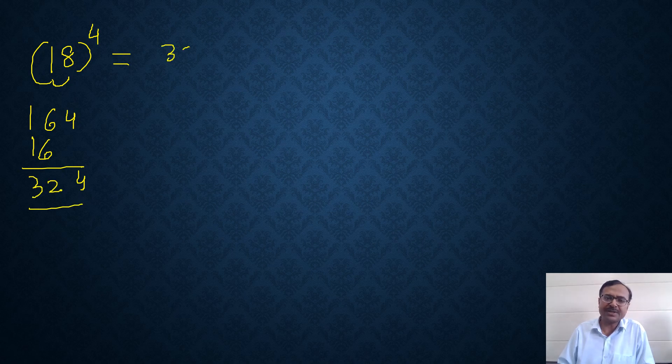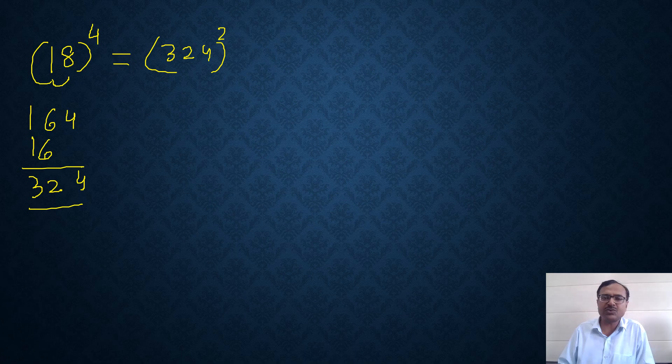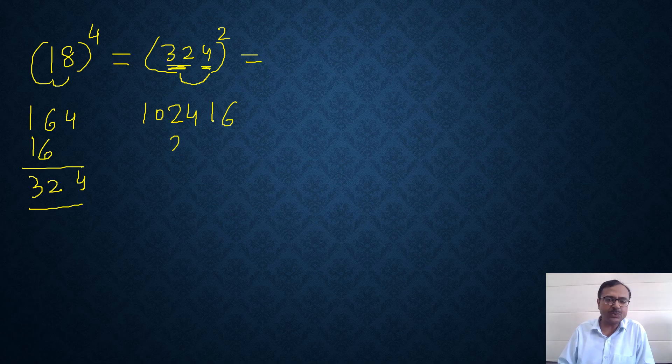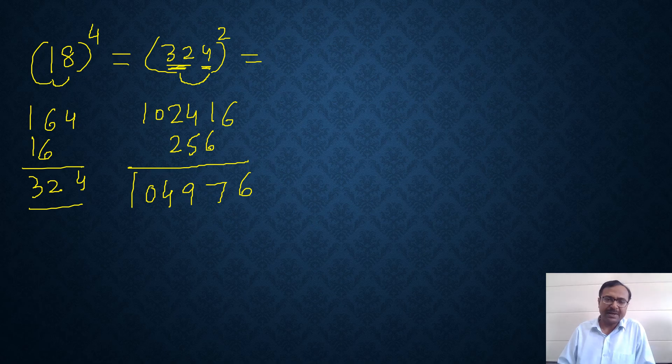So this is 324 square which will give me the answer. So 32 and 4. I know that 32 square is 1024, and 4 square is 16. 32 into 4 is 128, the double is 256, and I will write it like this, and then add vertically. 6, 7, 9, 4, 0, 1. So the 18 raised to power 4 is going to be 104976.